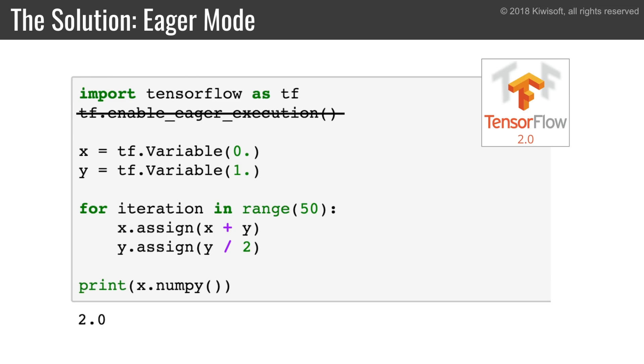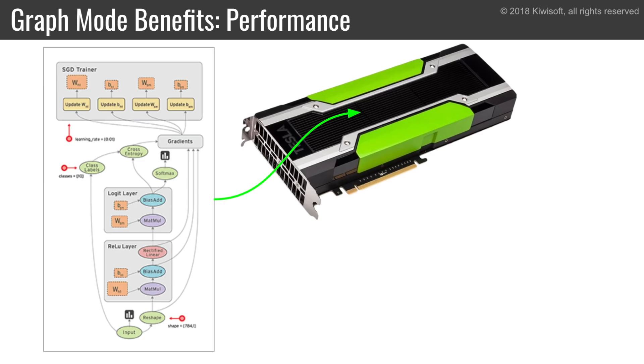Okay, so eager mode is great — it simplifies TensorFlow tremendously. So you might wonder, what's the point of graph mode? Well, graph mode has its benefits.